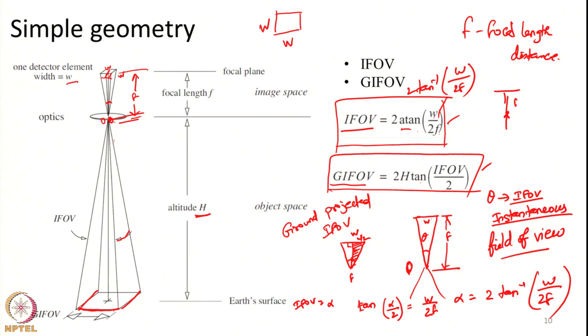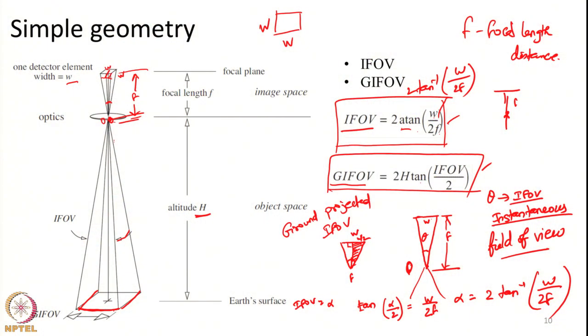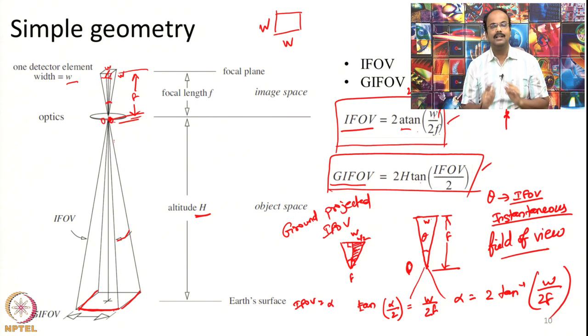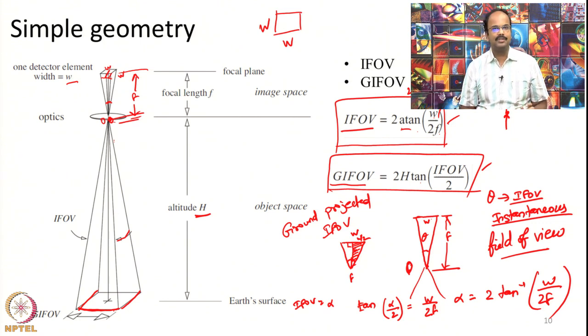IFOV is related to the angle subtended by a single detector element at the optical point where the ray from the earth surface enters the lens system. If you take the effect of the orbital height and combine it with this IFOV, we get the ground size subtended by each detector element — that is the GIFOV, the ground projected IFOV.